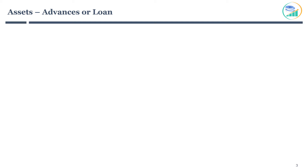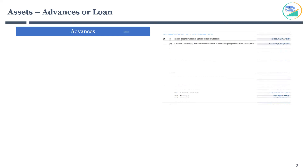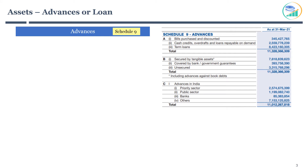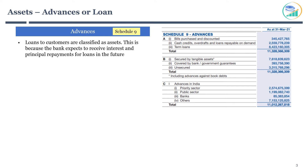The next important line item is advances, also referred to as loans. Reviewing Schedule 9 helps you understand the bank's advances or loan details. On the balance sheet, loans to customers are classified as assets, because the bank expects to receive interest and principal repayments in the future. You will notice that advances are usually the largest asset on the balance sheet.